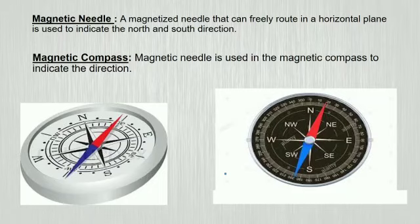Magnetic compass. A magnetic needle is used in the magnetic compass to indicate the direction. Now, why is a magnetic needle used in a compass?